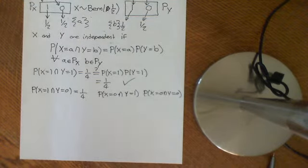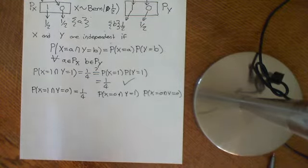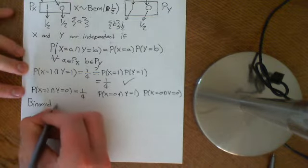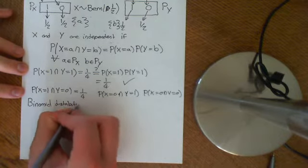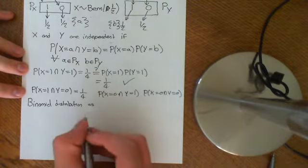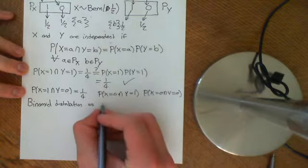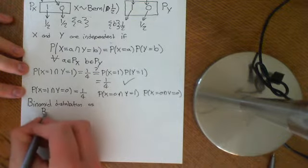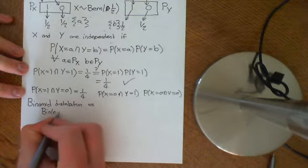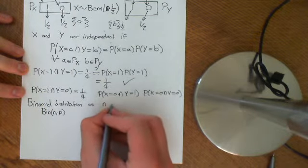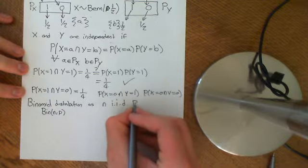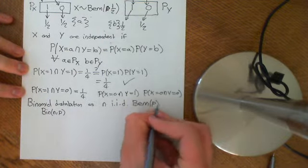Now we're going to look at the binomial distribution in a new way. We're going to look at the binomial distribution Bin(n, p) as n independent, identically distributed Bernoulli(p) distributions. What does that mean? I'll show you.